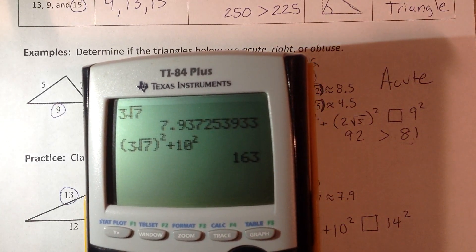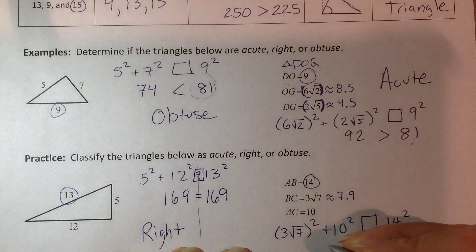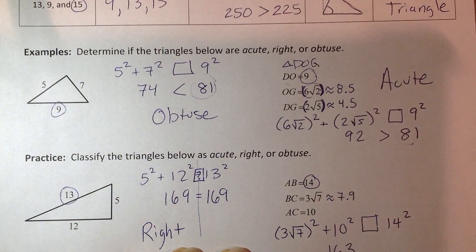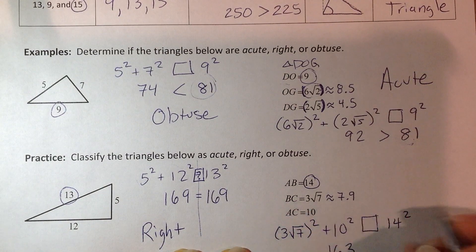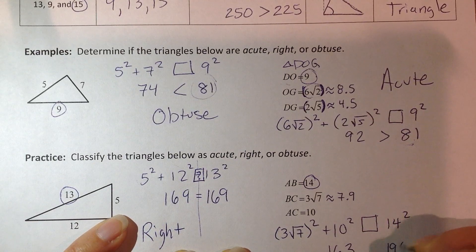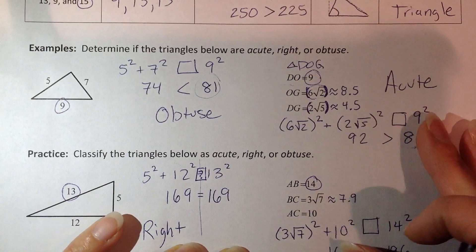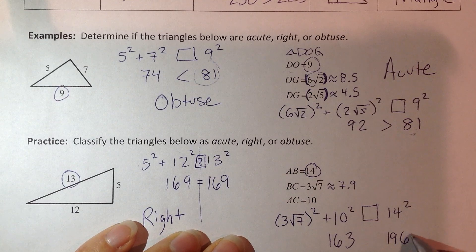So that's what it should look like when we enter it. I should get 163. Make sure you know how to do this in our calculator. And then 14 squared is 196. So stop and think about that. Let's see what happened to C.